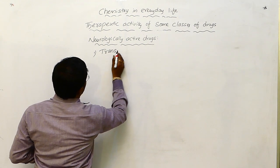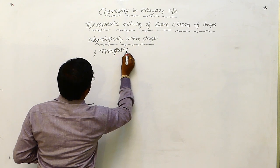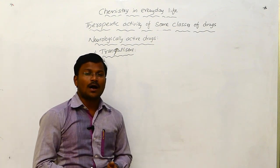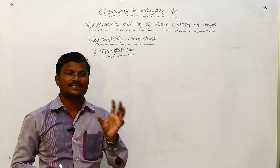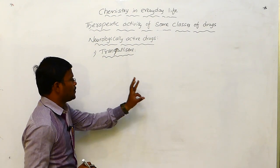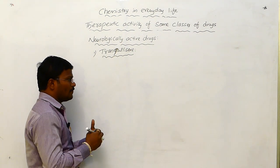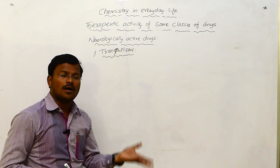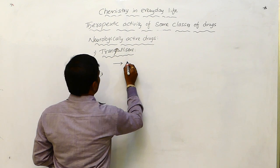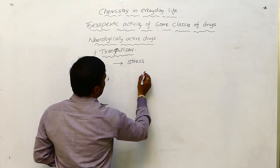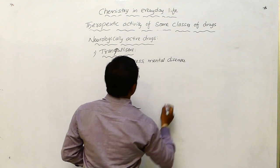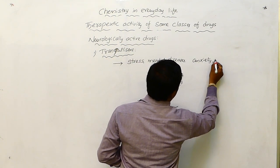Number one: Tranquilizers. The chemical substances which are responsible for neural nervous system response — they are involved in neural nervous system responses. That means they participate in the propagation of neural messages from one neuron to another neuron or one neuron to an effector cell. Most of the time, tranquilizers are used to cure stress, mental disorders or mental diseases, anxiety, tension, etc.